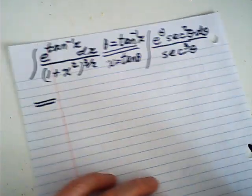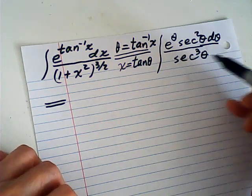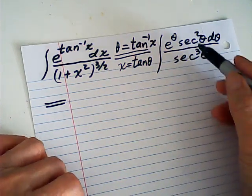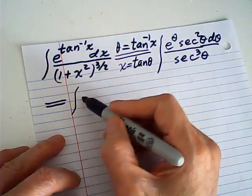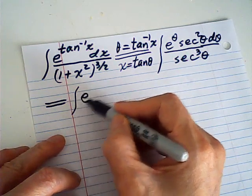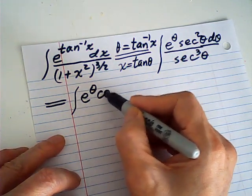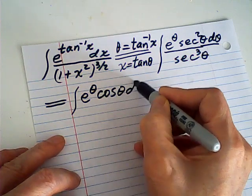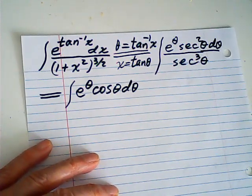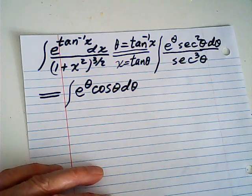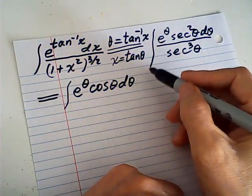Then to cancel a secant squared, 1 over secant is cosine. So my integral becomes the integral of e to the power theta times cosine theta d theta. It's very easy now — obviously we are doing integration by parts.